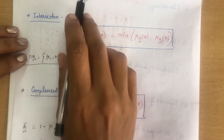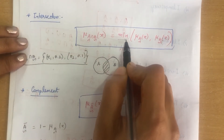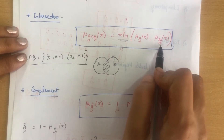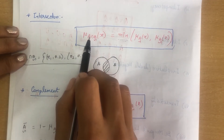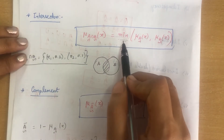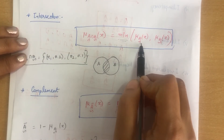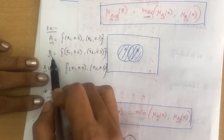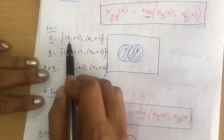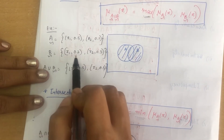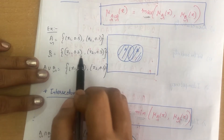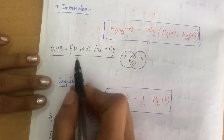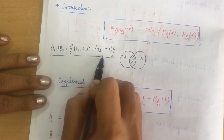For intersection, unlike union where we take maximum, here we use minimum: μ_{A∩B}(x) = min(μ_A(x), μ_B(x)). Using the same example, A ∩ B: for x₁ min(0.5, 0.2) = 0.2; for x₂ min(0.1, 0.3) = 0.1. So A ∩ B = {(x₁, 0.2), (x₂, 0.1)}.